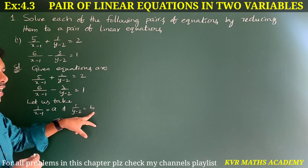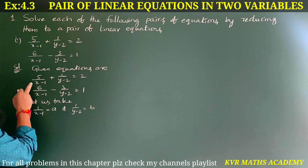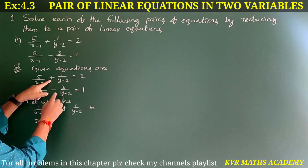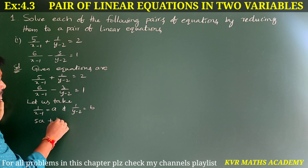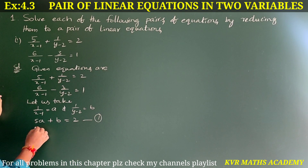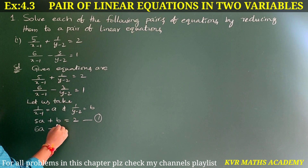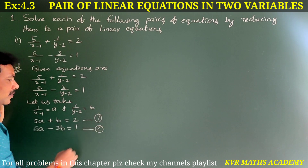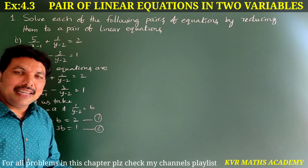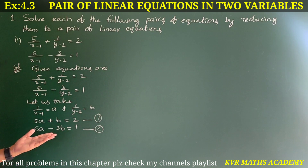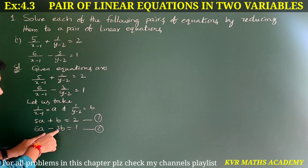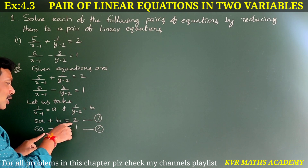Using a and b, rewrite the equations. The first becomes: 5a + b = 2 (equation 1). The second becomes: 6a − 3b = 1 (equation 2). Now let us solve these two equations by the elimination method. We need to cancel either a or b. Here we have 6a and 5a, and 3b and b, so multiply equation 1 by 3 so that the b terms cancel when added.